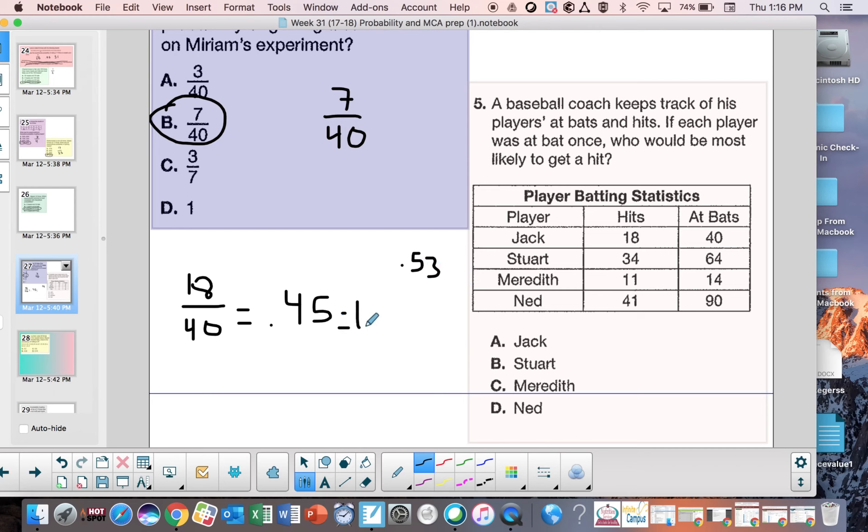Meredith got 11 out of 14, which is 0.78 or 78%. And then Ned got 41 out of 90. That is 0.45555, so we just put 45%. If I'm coaching this team, and we have to put someone up at bat to try to get a hit, I'm going to pick Meredith for sure. Because Meredith gets 78% of the time she gets a hit. So that's a really good percentage, and that's higher than the other players.